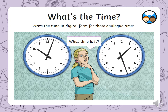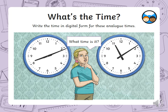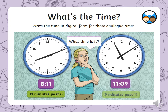Now do the same thing for these 2 clocks before I show you the answers. Remember to write it down in how we would write it on a digital clock and how we would say it verbally for both clocks. So here's your example: that's 8:11, so 11 minutes past 8, and 11:09, that's 9 minutes past 11.